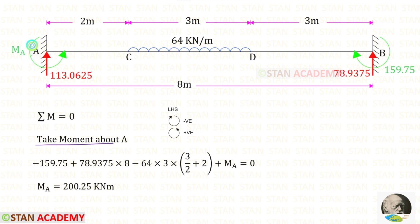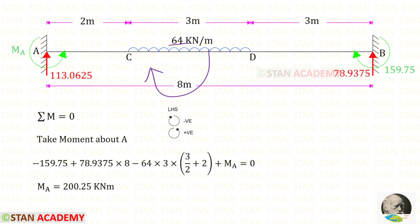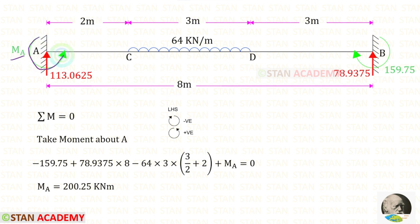Now let us take a moment about A to find MA. MB acts clockwise (negative), RA acts anti-clockwise (positive) with distance 8, and the UDL acts clockwise (negative) over distance 3, with centroid at distance 3/2 plus the remaining distance of 2. Assuming MA acts anti-clockwise (positive), we get a positive value for MA, confirming that MA acts in the anti-clockwise direction.